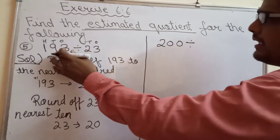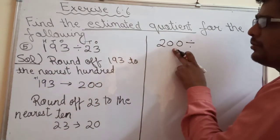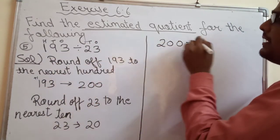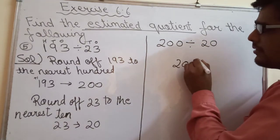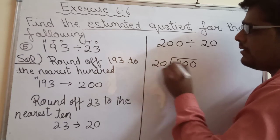Divide 200. 193 ki jagey pe aap 200, 23 ki jagey pe aap 20 likho. Ab aap ise divide karo. 200 divided by 20.